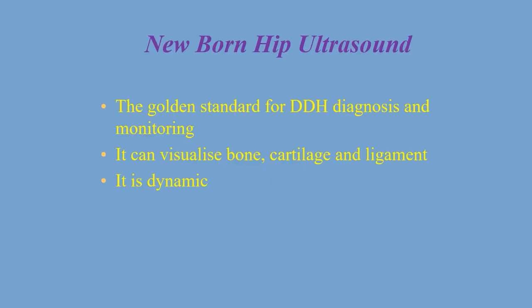Hip ultrasound has become the golden standard not only for diagnosis but also for monitoring of hip dysplasia in children. It can visualize bones, cartilage, and ligament. That's why it is superior to x-ray in the first few months of life. It's also dynamic and can visualize the femoral head within the socket.